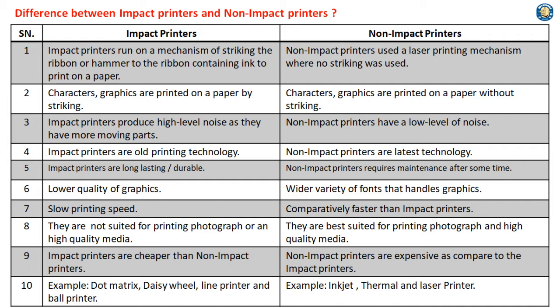Characters and graphics are printed on paper by striking in Impact Printers. Impact Printers produce high-level noise as they have more moving parts, whereas Non-Impact Printers have a low level of noise.